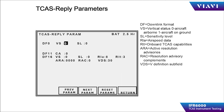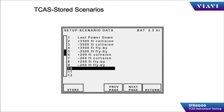The TCAS reply parameters page affords the operator the opportunity to set some of the reply parameters related to the acquisition and operational status of the target being generated. Some of these parameters are vertical status, capabilities, sensitivity levels, etc. The operator can choose to configure the parameters of the target manually or can select from one of the canned scenarios provided with the IFR 6000. There are three empty scenario slots to allow the operator to save and subsequently recall a custom setup.